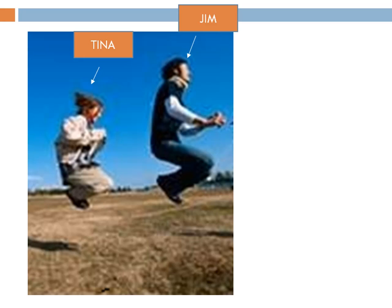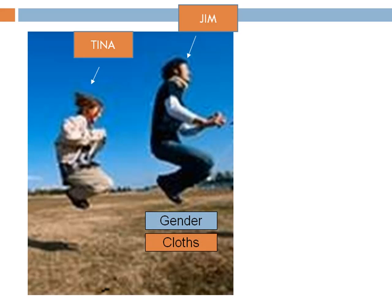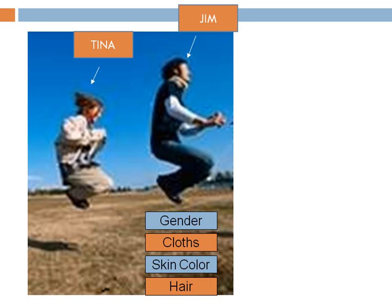Next, your brain tries to implicitly learn various attributes or properties about the human objects — properties like gender, clothes, skin color, hair, and so on.